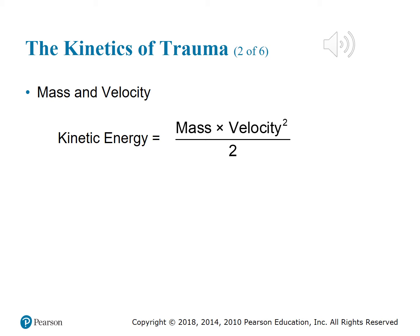Consider a traffic collision: a patient in a Honda Civic crashes into a tree. The mass is the car and everything inside; the velocity is how fast they're going. At 20 mph, maybe some injuries. At 40 mph, airbags deploy, worse injuries. At 120 mph, the patient is much worse off. Velocity plays the biggest role in kinetic energy. Speed kills.